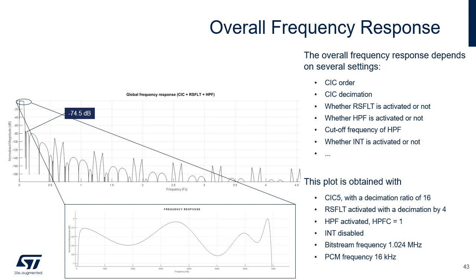This upper figure shows the overall frequency response for a 16 kHz audio signal with a digital microphone working at 1.024 MHz. The filter configuration is as follows: CIC order 5 with a decimation ratio of 16, RS-FLT enabled with a decimation ratio of 4, HPF enabled with a cutoff frequency of 40 Hz. The lower figure shows the in-band ripple for a 16 kHz audio signal with the same microphone. The filter configuration uses CIC order 5 with a decimation ratio of 16, RS-FLT enabled with a decimation ratio of 4, HPF enabled with a cutoff frequency of 20 Hz. The resulting in-band ripple is plus or minus 0.41 dB for CIC 5. The minus 3 dB cutoff frequency is 7061 Hz.